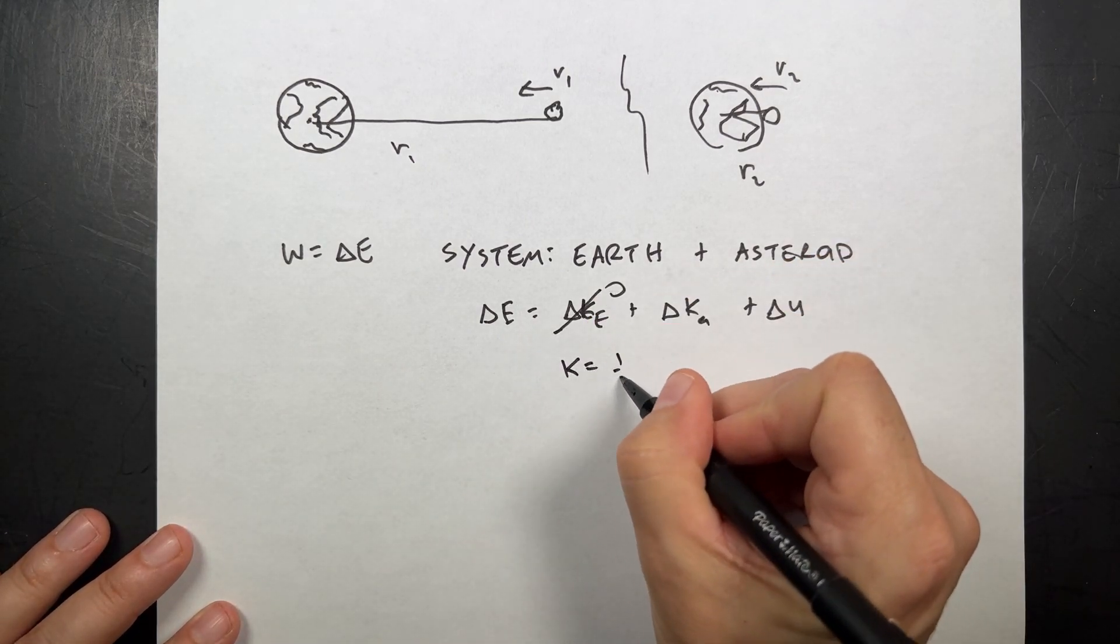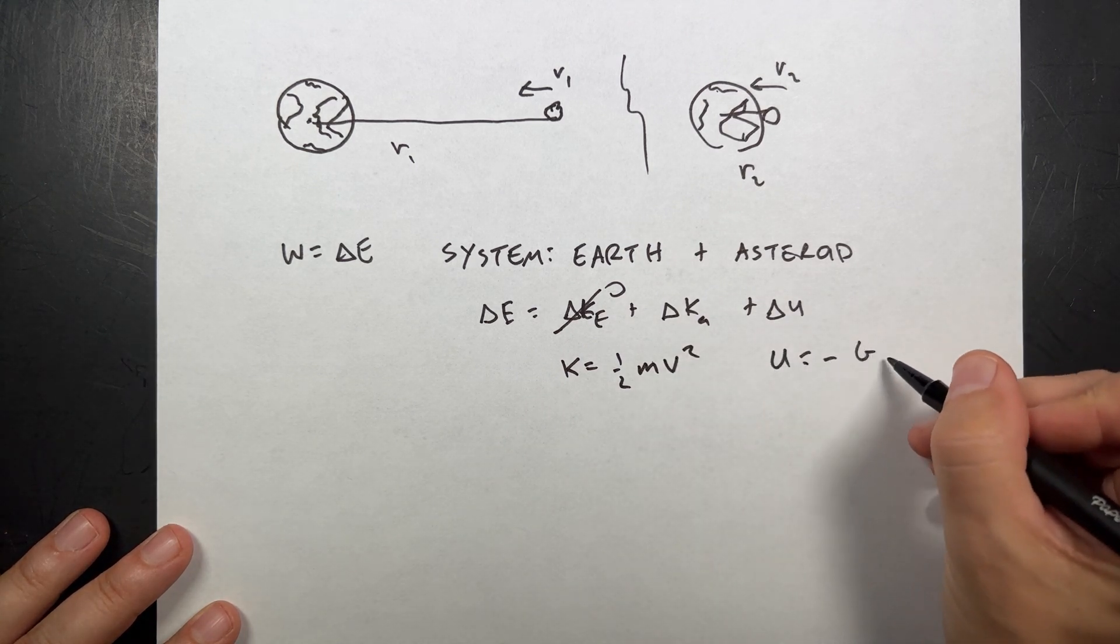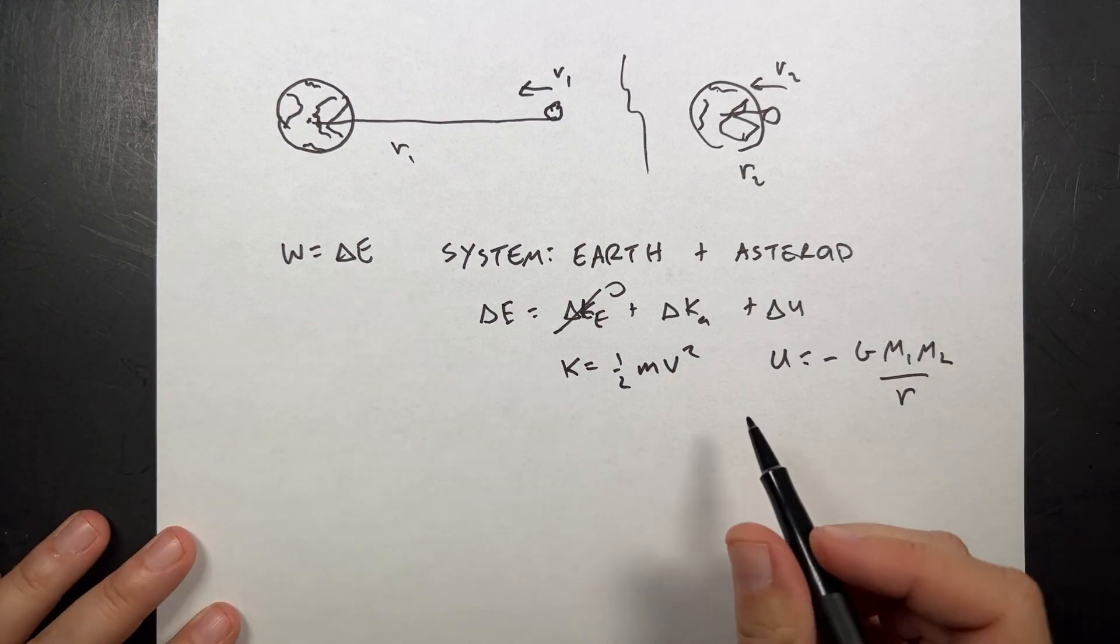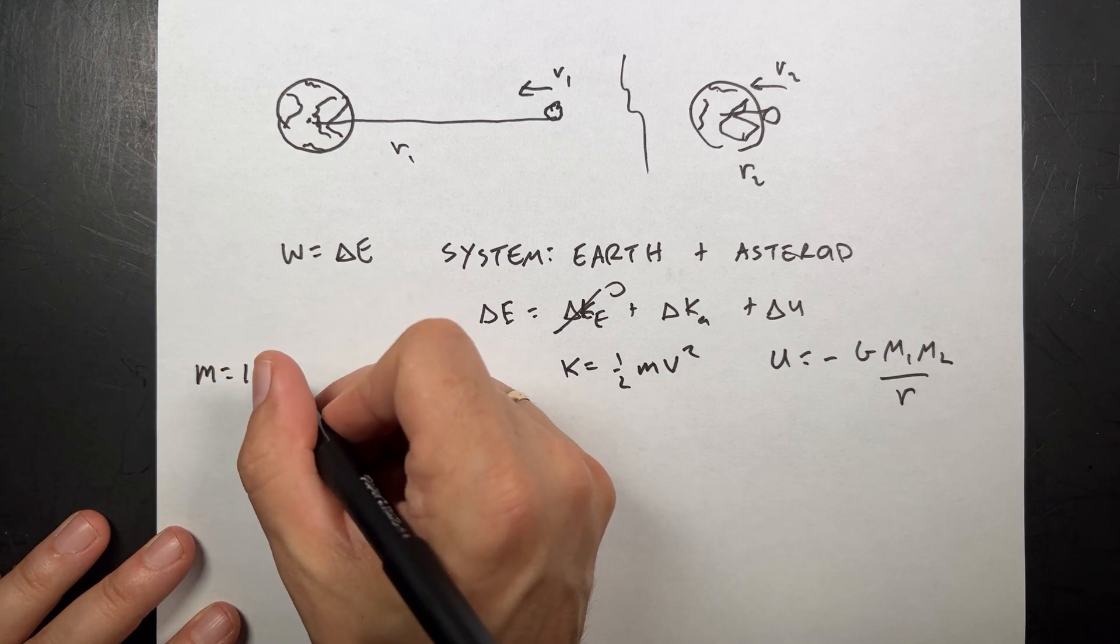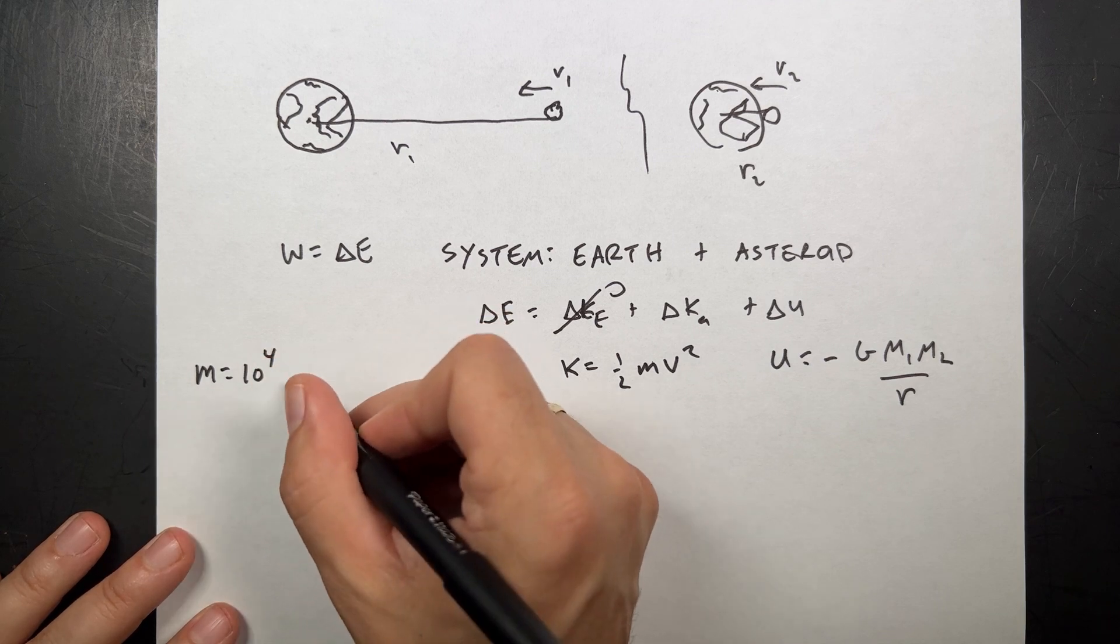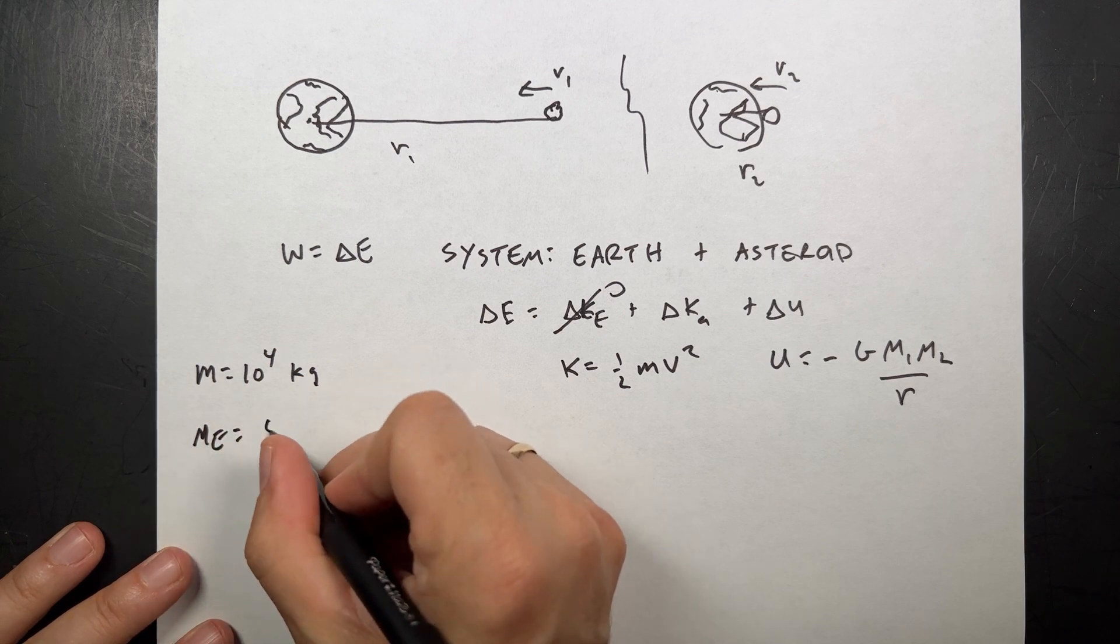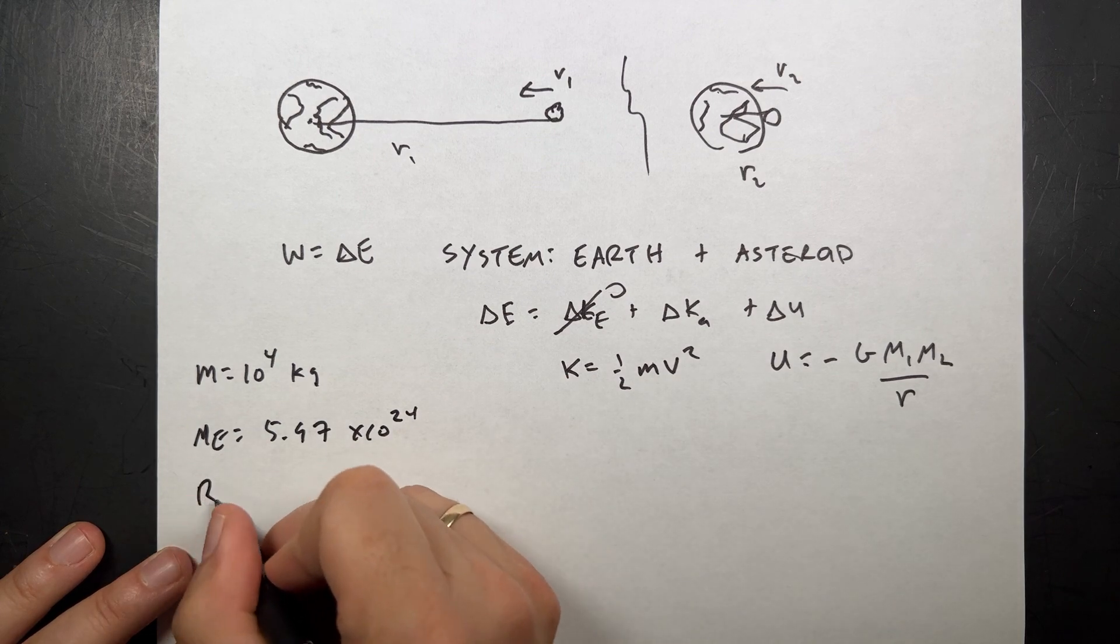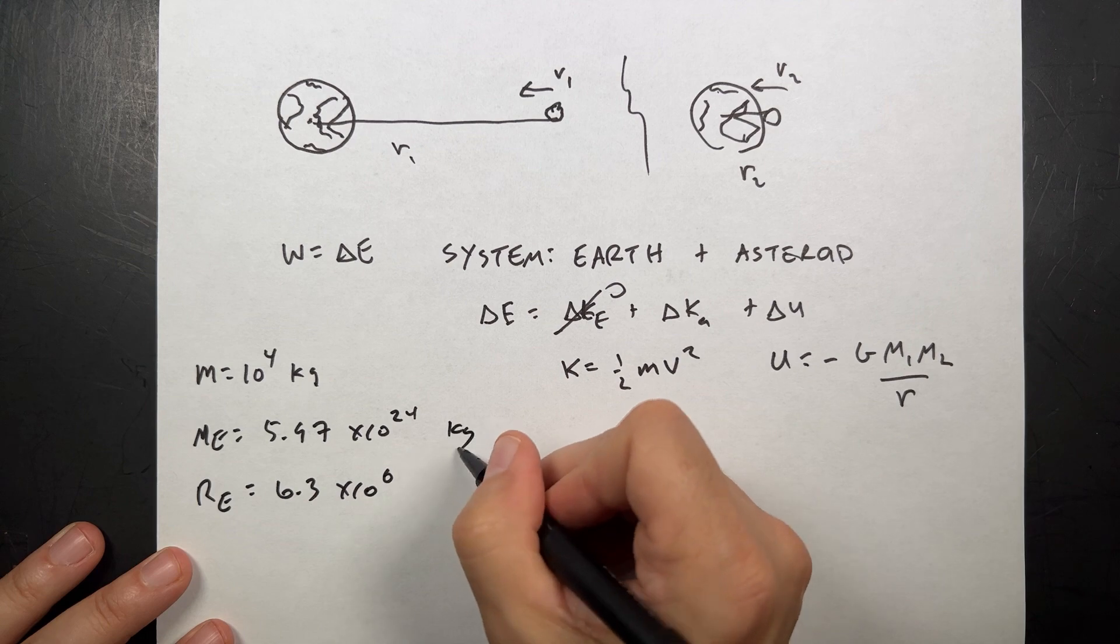And then I can say kinetic energy is one-half mv squared. And gravitational potential energy is negative g m1 m2 over r. So let's just put down some values here. I have the mass of the asteroid is 10,000, so 1 times 10 to the 4th. The mass of the Earth, 5.97 times 10 to the 24th. The radius of the Earth is 6.3 times 10 to the 6th kilograms, meters.